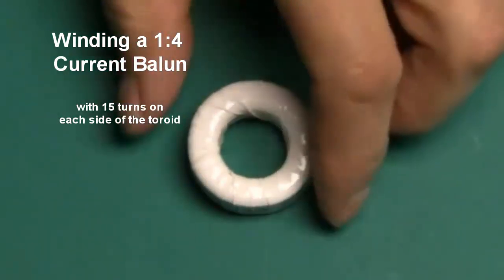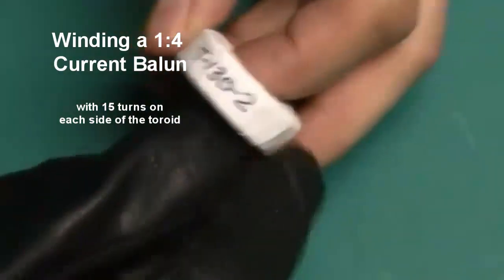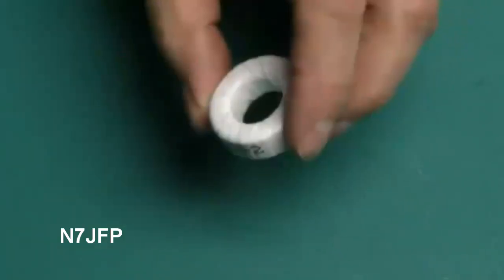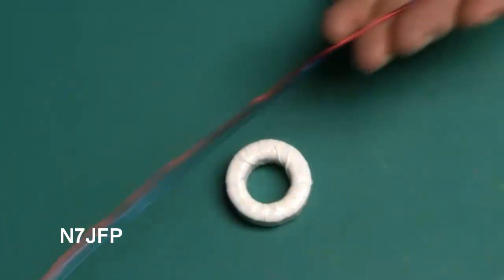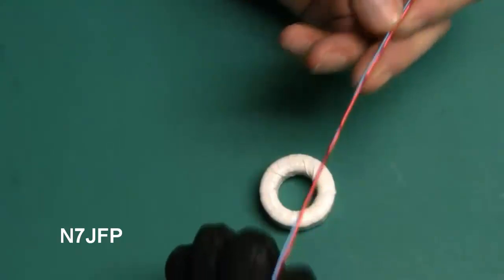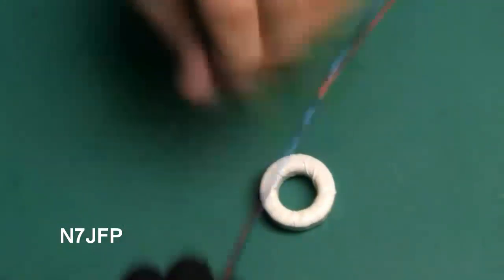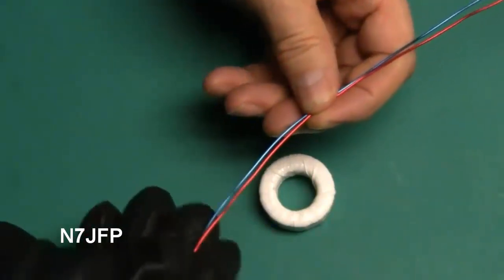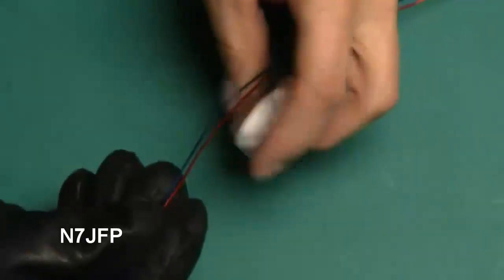In this video we're going to be winding a T130-2 iron powder toroid. I've already wrapped it in electrical tape and I've cut some wire, 30 inches of red and blue, taped them at the end. I'm going to bend it halfway in between and do half of it to start with, and then do the other half.